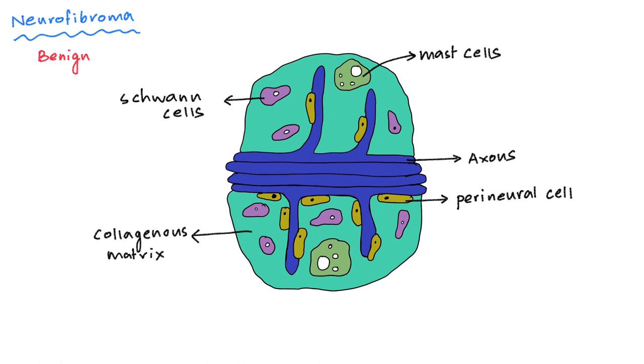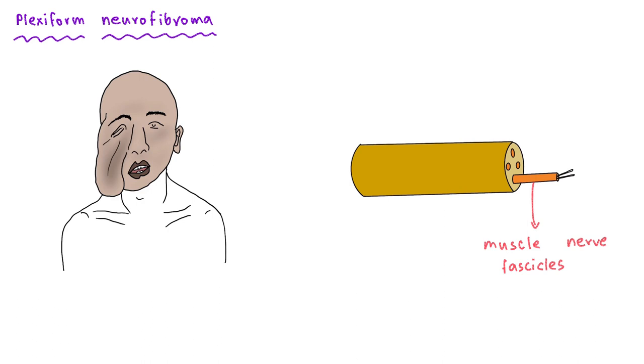Plexiform neurofibroma is a type of neurofibroma that causes severe disfigurement. These arise from fascicles of nerves supplying the muscles and can be invasive in nature.